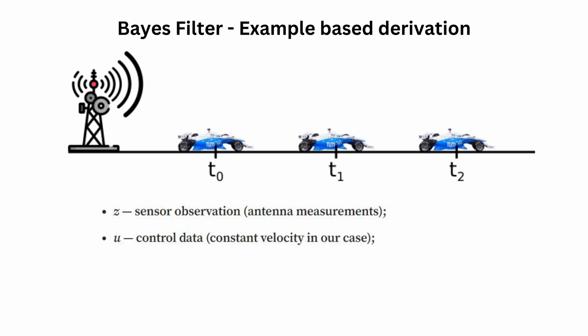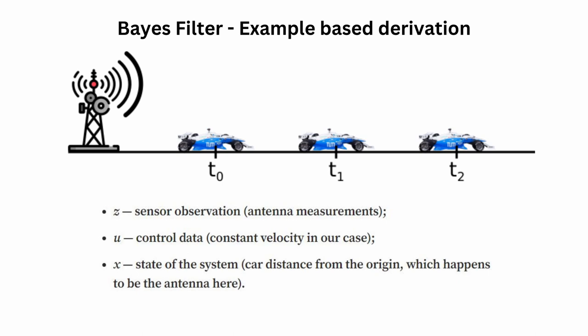You give velocity to the car and the position changes — that is how you're controlling the state. The third variable is X, which is the state of the system. In this case, it is basically the position of the car or distance of the car from the origin, which happens to be the antenna. So the antenna is at your point of origin. We have sensor observation Z, control data U, and state of the system X. These variables are well defined in our example, but they can vary based on the problem statement.